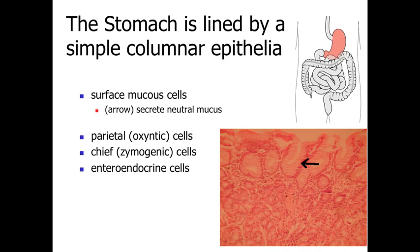The stomach has surface mucosal cells forming the simple epithelium, but there are also invaginations — gland-like structures extending down into the mucosa. Within these glands we're going to have parietal cells (also referred to as oxyntic cells) and chief cells (also referred to as zymogenic cells). We also have a few enteroendocrine cells, which respond to conditions within the stomach and release hormones to signal other regions of the stomach or digestive system to promote digestion.